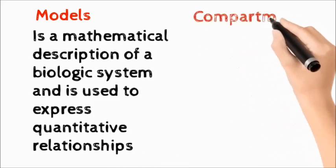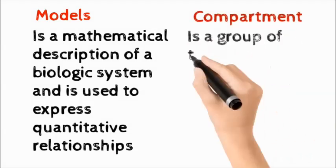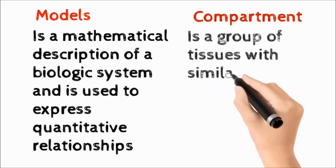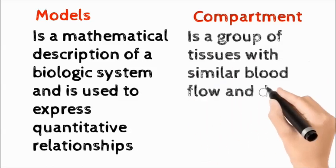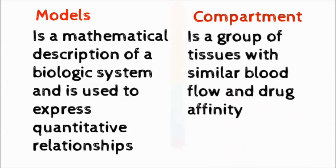Starting from Model, it is a mathematical description of a biologic system and is used to express quantitative relationships, whereas Compartment is a group of tissues with similar blood flow and drug affinity. This is the basic difference between both of them.